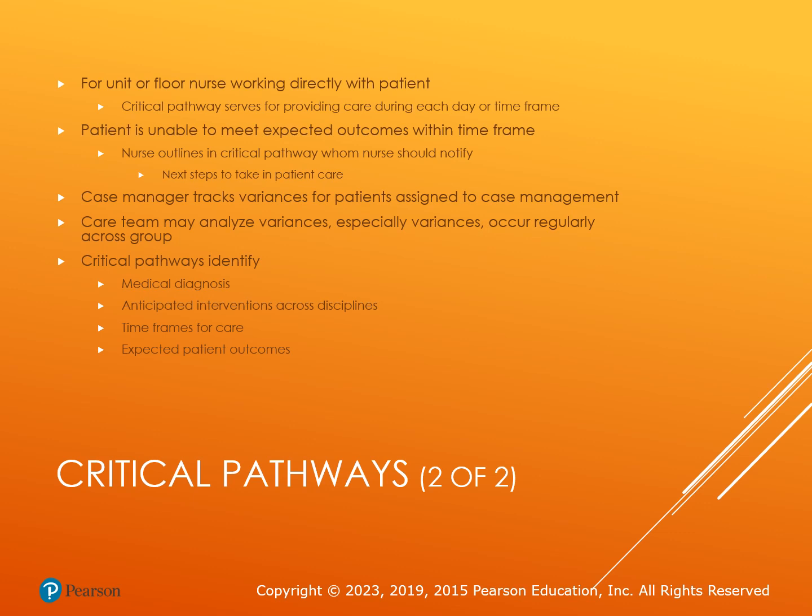These are just guidelines based on evidence-based practice — a guide saying this patient should probably stay in the hospital no more than five days. Variances are things that are off the beaten path, unexpected, and variable. Critical pathways include medical diagnoses, anticipated interventions across disciplines such as nursing, pharmacology, and therapies, time frames for care in days, hours, or visits, and expected patient outcomes. All critical pathways should include the ability to identify and document variances — care is based on individualized needs. Critical pathways vary according to patient needs, agency protocols, or current best practices.